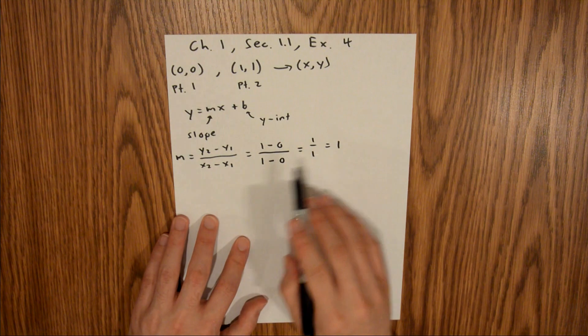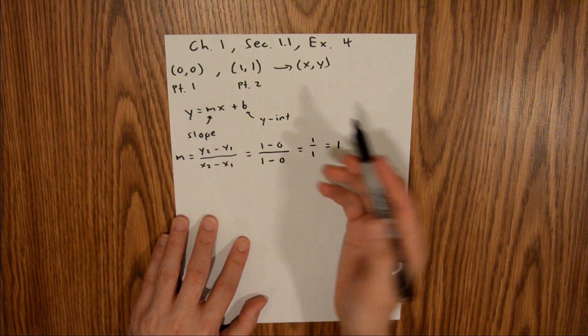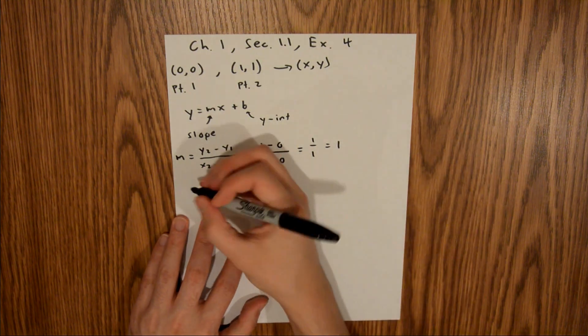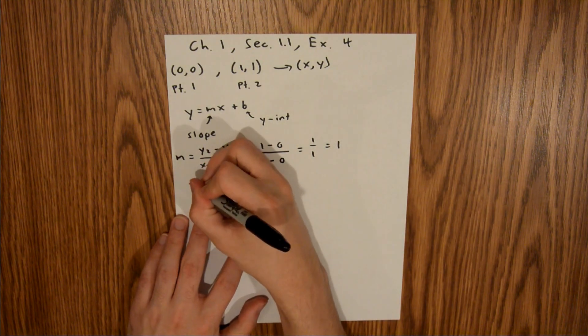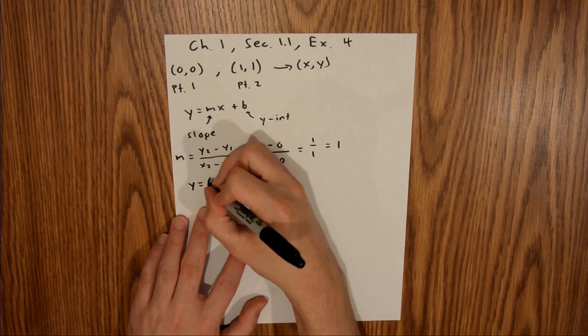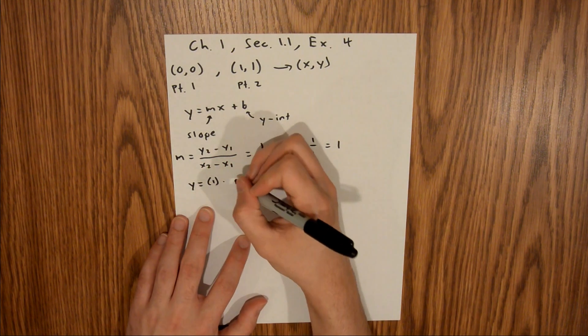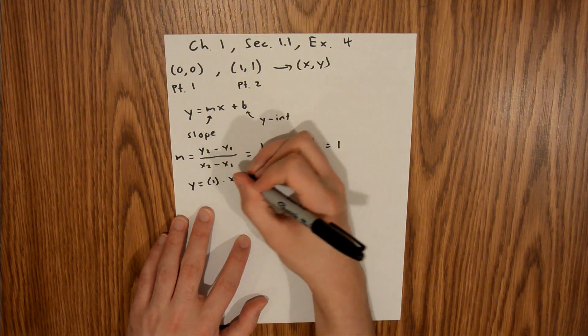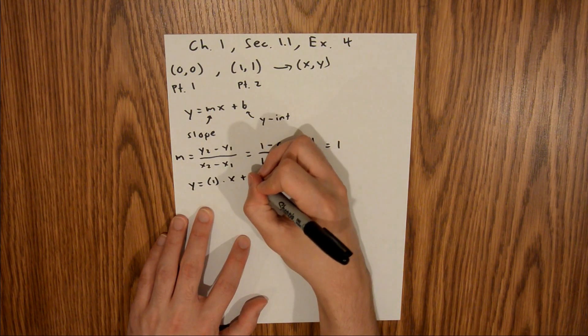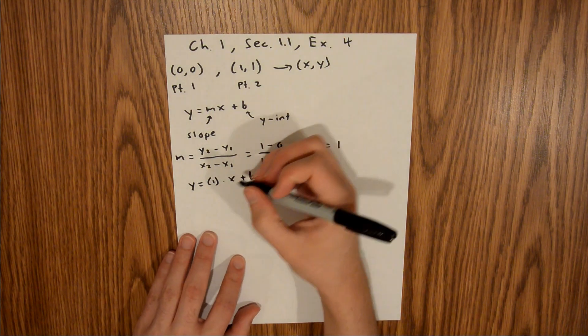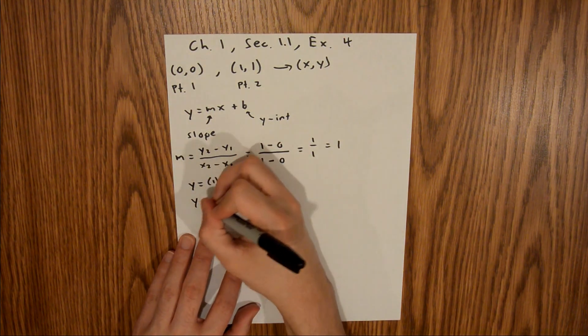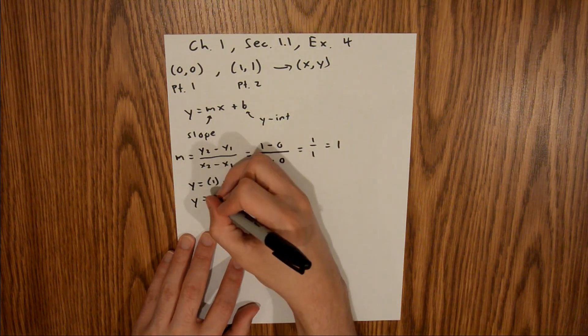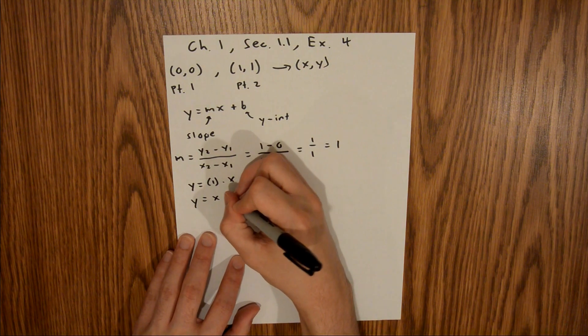Now we can plug this slope into our generic equation. That gives us y equals 1 times x plus b, or simply y equals x plus b.